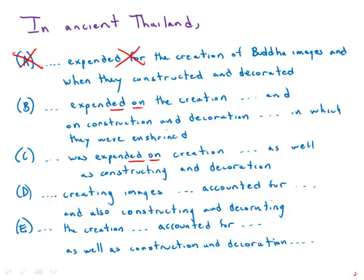The main structure of this sentence depends on the parallelism of the three actions. The local artisans would create Buddha images, and they would construct and decorate temples. Those three verbs have to be in forms that are parallel. So creation, constructed, decorated — that's a failure of parallelism, so A is out. Creation, construction, decoration — that's parallel. That works.